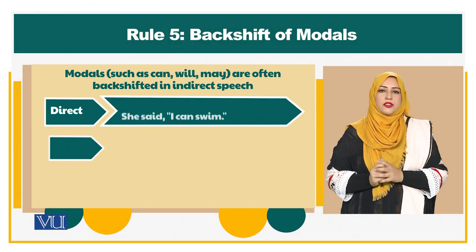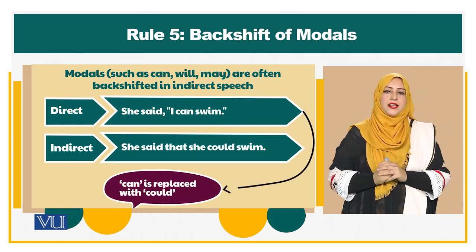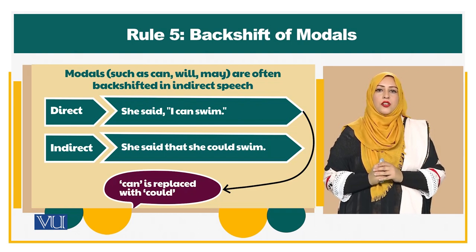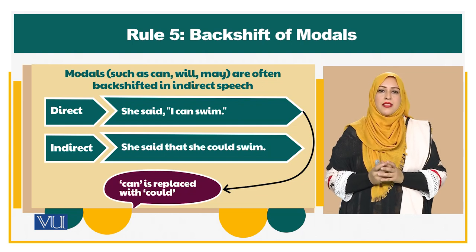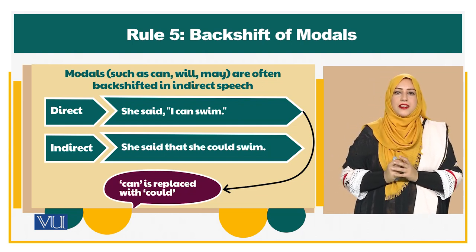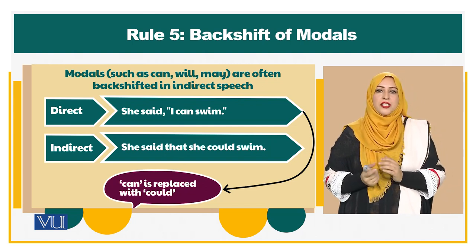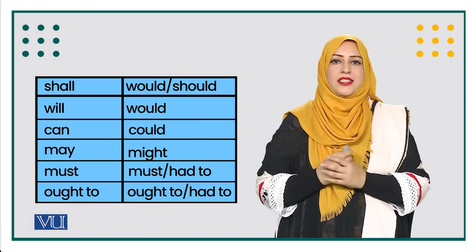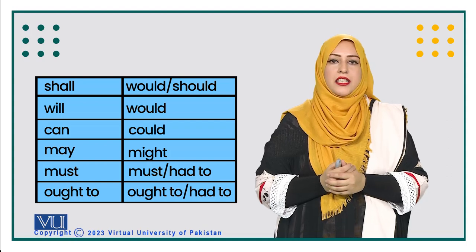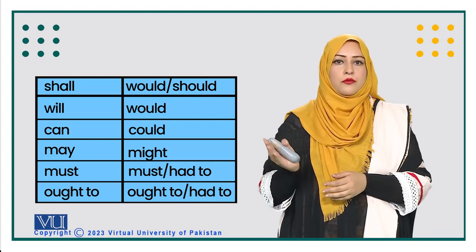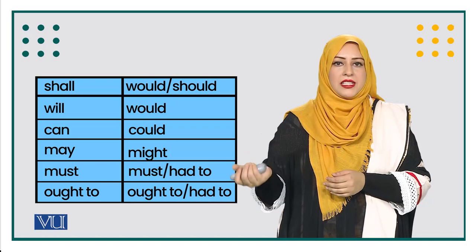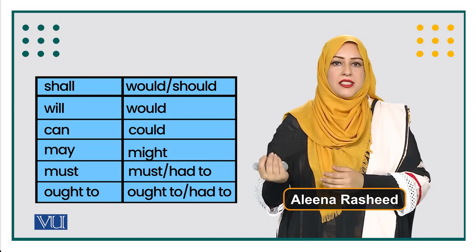The fifth rule of conversion is the backshift of modals. When converting direct speech into indirect speech, words such as 'can,' 'may,' and 'will' are sometimes backshifted. For example, the direct speech 'She said she can swim' becomes 'She said she could swim' in indirect speech — 'can' is replaced with 'could.' The list of backshift modals shows that 'will' is replaced with 'would,' 'can' with 'could,' 'shall' with 'should,' 'may' with 'might,' and 'ought to' with 'ought to have.'